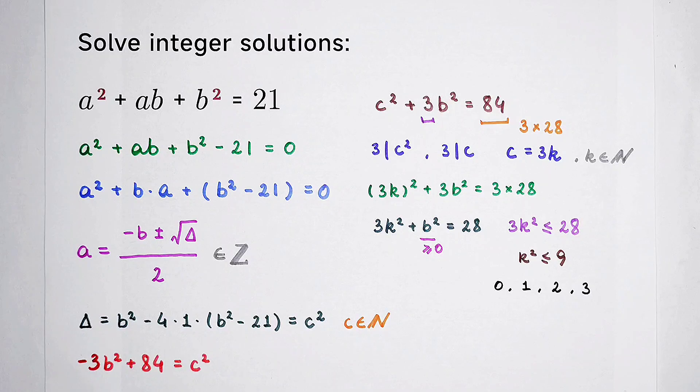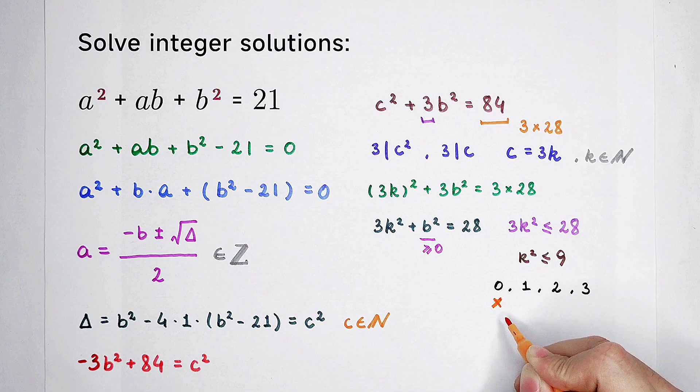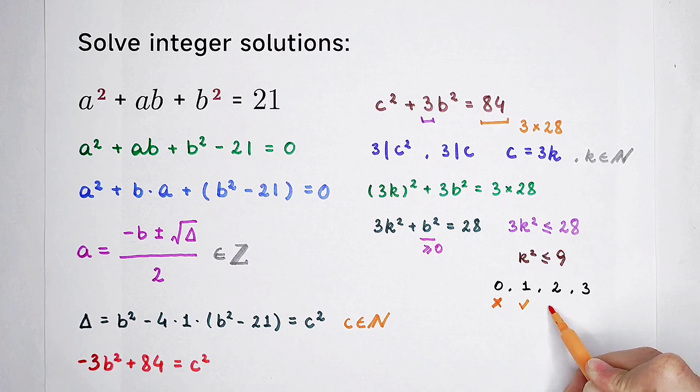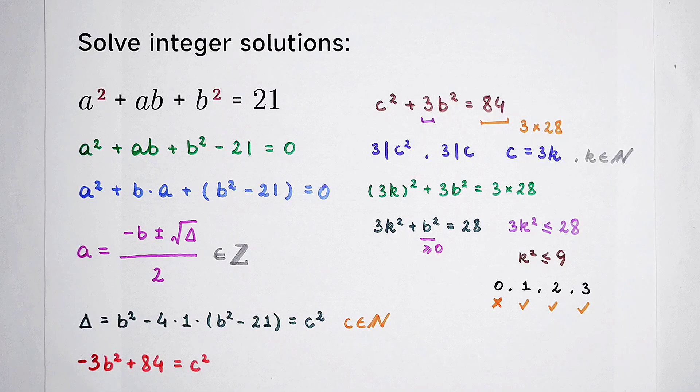If k is equal to 0, of course, there aren't any solutions. Since b squared is equal to 28. This equation doesn't hold. If k is equal to 1, 2, and 3, there are solutions. And I can tell you many, many solutions. I don't have any place anymore. You can do it yourself.